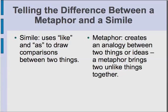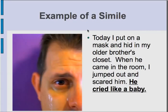Here's an example of a simile. Today I put on a mask and hid in my older brother's closet. When he came in the room, I jumped out and scared him. He cried like a baby. This last sentence, 'he cried like a baby,' is a simile. It brings together the brother and a baby — they're not the same thing. The brother is obviously not a baby, but he cried like a baby. The use of 'like' in this sentence makes it a simile.